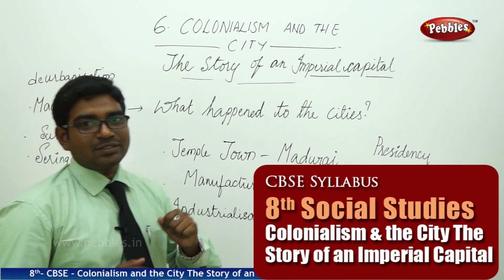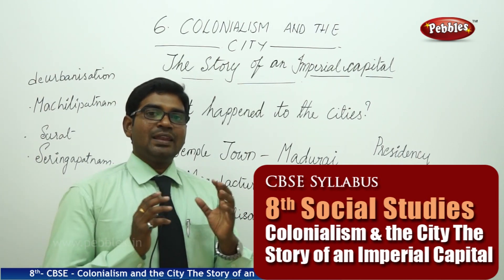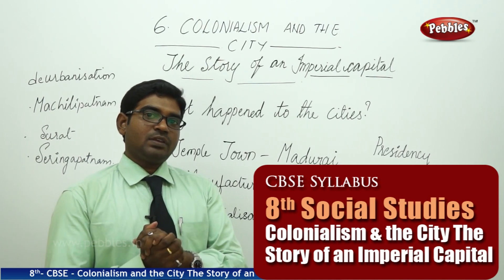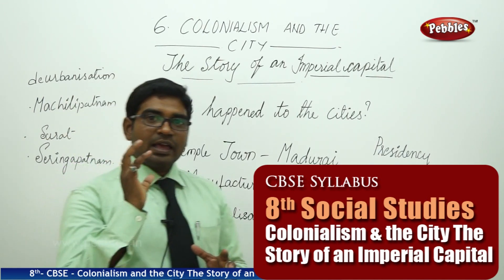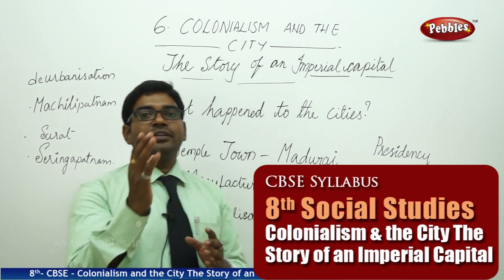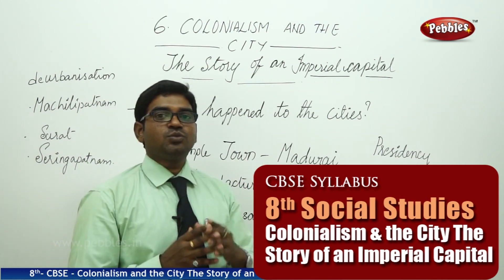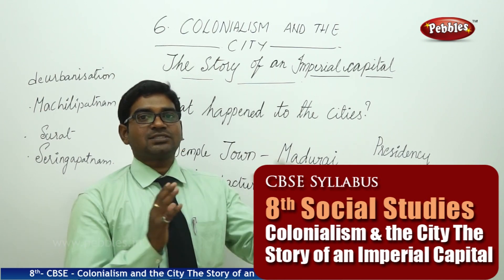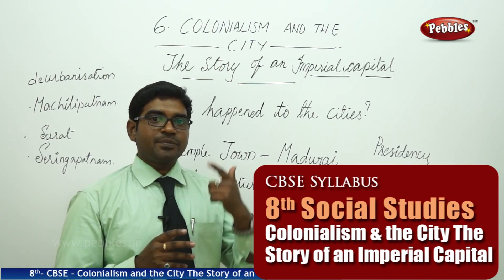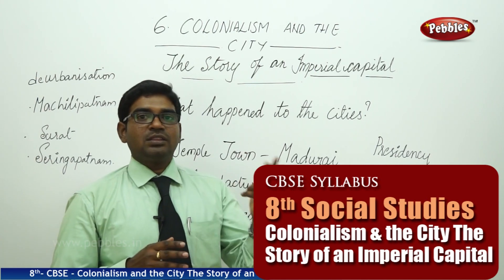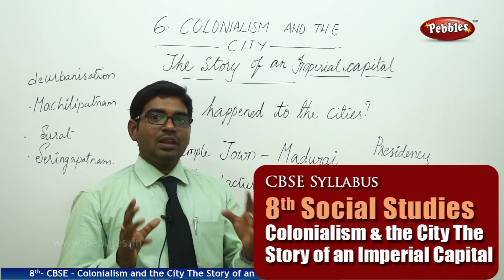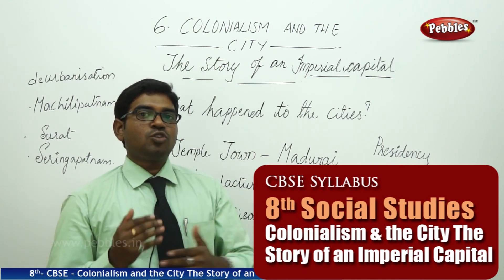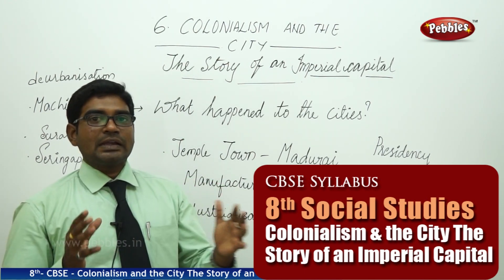What happened to the cities? We have discussed in the previous lessons what happened across the countryside. The British entered into the villages and divided the entire village lands into zamindars' control. They followed certain methods for tax collection like the Permanent Settlement, the Ryotwari system, and the Mahalwari system. Ultimately all the systems failed and they could not get much profit from the countryside.